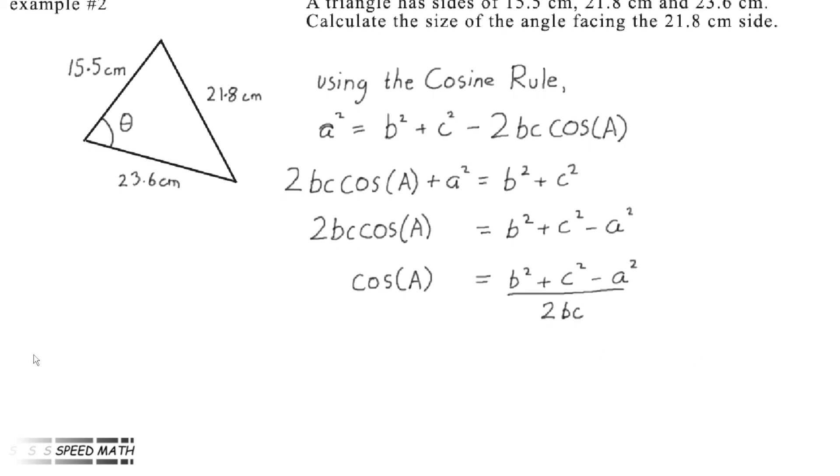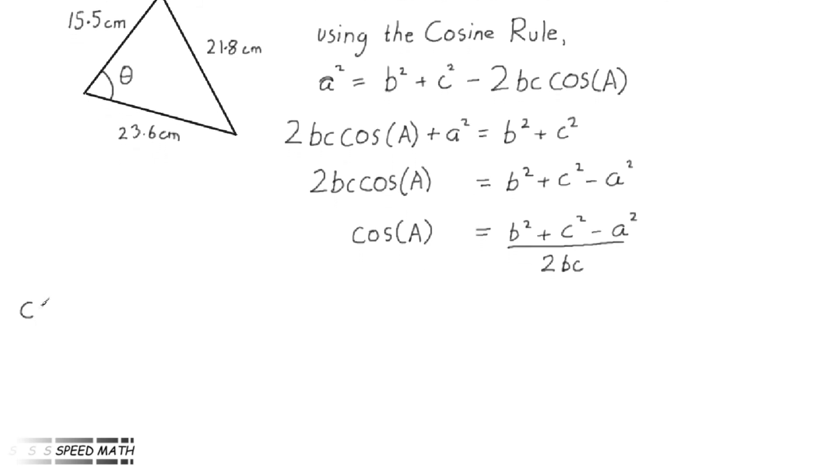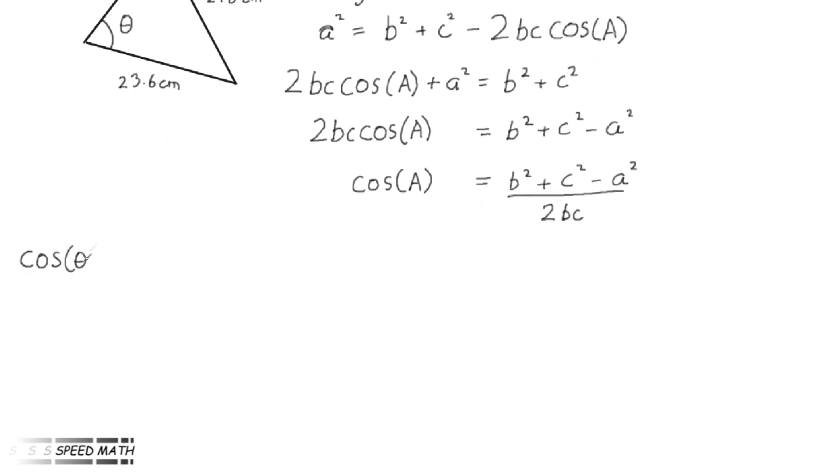Now, if we change the A to theta and put some numbers in, we have cos(θ) equals (23.6)² plus (15.5)² minus (21.8)² all over 2 times 23.6 times 15.5.